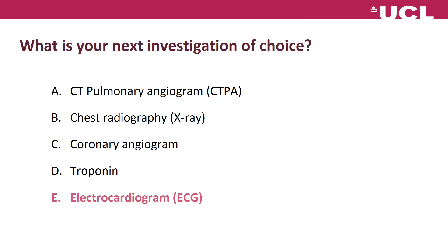We would ideally get a coronary angiogram, but realistically, unless Mr. Majeed is having a STEMI — and at the moment there's no clear evidence of that — there's no indication for immediate angiogram. If he had ST elevation in the ambulance en route, he would be diverted to the cath lab for urgent primary PCI. We would also do a troponin, but the result may not return for one to two hours or more, so the ECG is the quickest, most immediately diagnostic investigation.